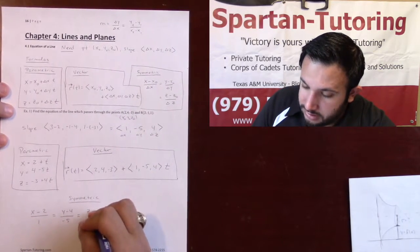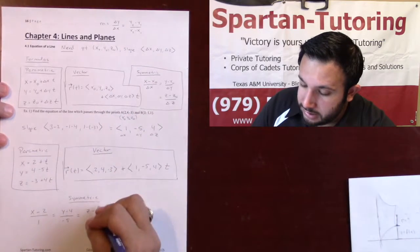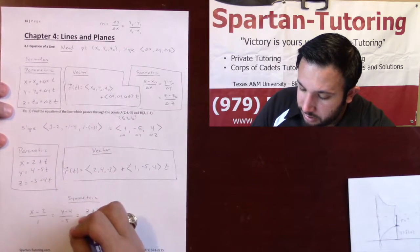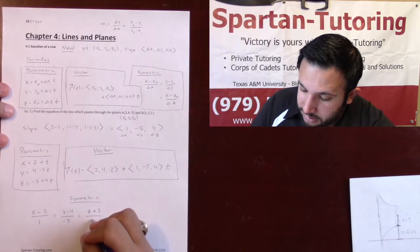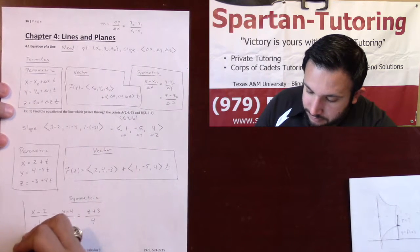is equal to z minus z naught, so z naught's a negative 3, so it's going to be plus 3, over delta z, delta z is 4, and that's it.